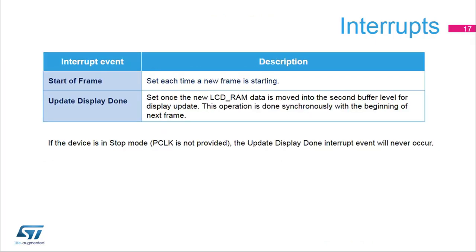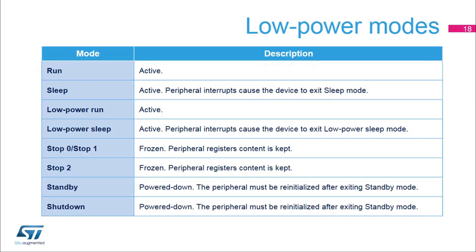Two interrupt events are available with the LCD controller. They both share the same interrupt vector. A start of frame interrupt is set each time a new frame starts to help synchronize software events. The update display done interrupt is set once the new LCD RAM data is moved into the second buffer level (LCD display) to update the display. This operation is performed synchronously at the beginning of the next frame. The LCD controller supports all STM32L4 low power modes, making it very efficient in terms of power consumption. In standby and shutdown modes, the controller is off.